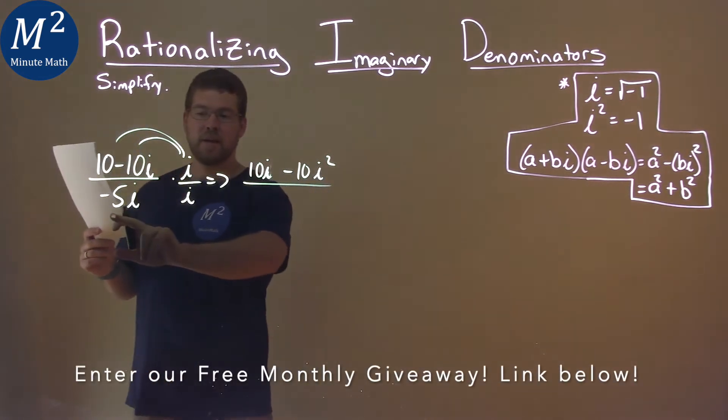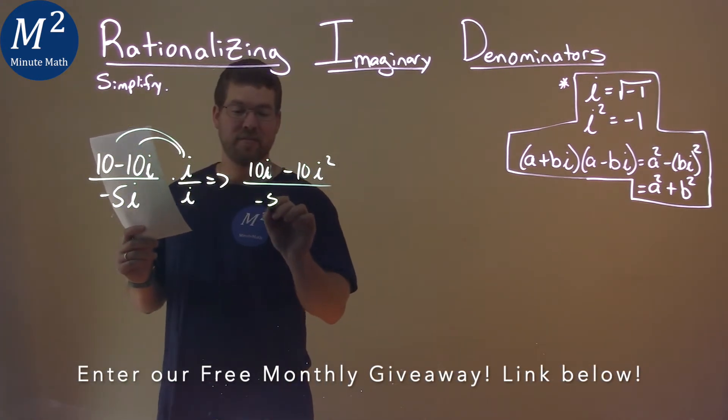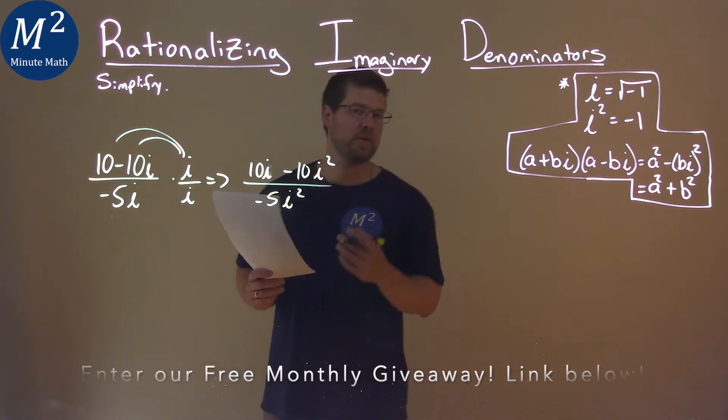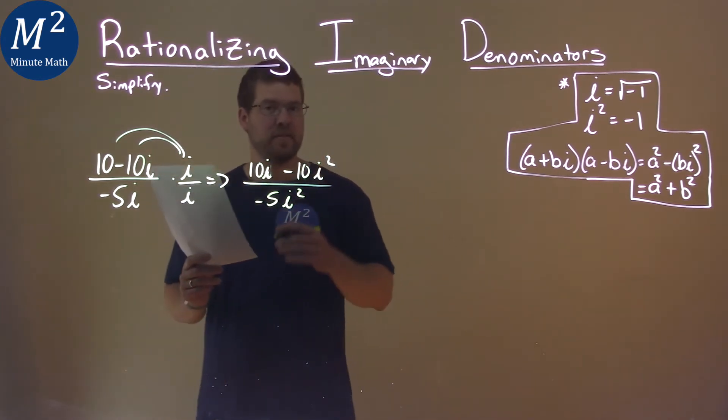Denominator, negative 5i times i is negative 5i squared. And here's the kicker, i squared equals negative 1, so we're going to get i's out of our denominator.